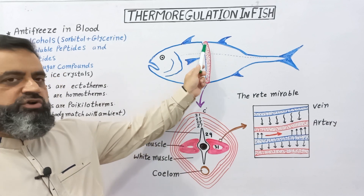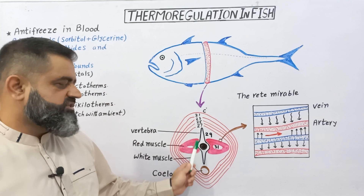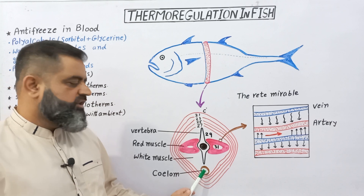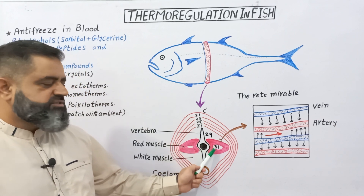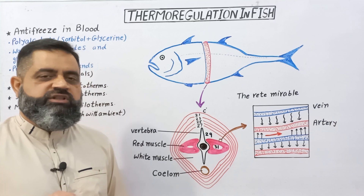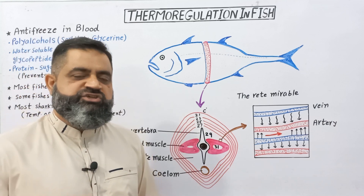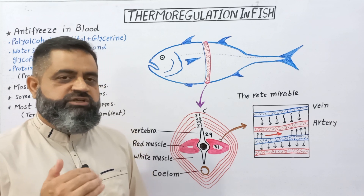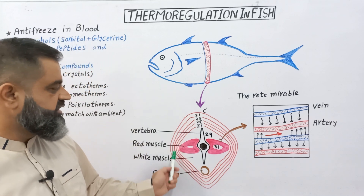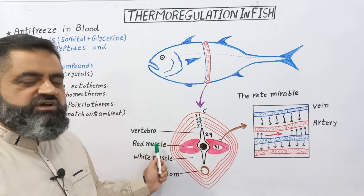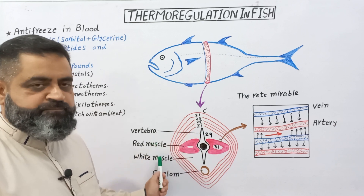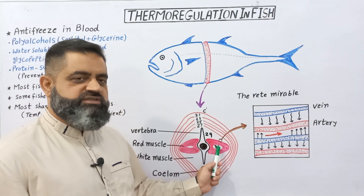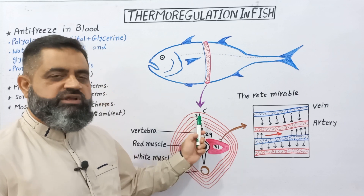I have taken a cross-section of the tuna fish. In the center, you can see the vertebra — the bone of the vertebral column. Right over here is the coelomic cavity. These are the red vessels, which are involved in powerful contraction and relaxation, helping in the fast and powerful movement of these fishes. On the periphery, there are muscles known as white muscles. The temperature in the red muscle is higher, at 31 degrees centigrade, while the temperature in the white muscle is 21 degrees centigrade.